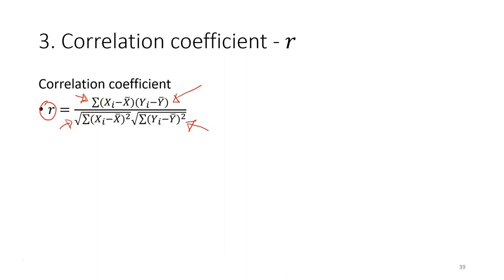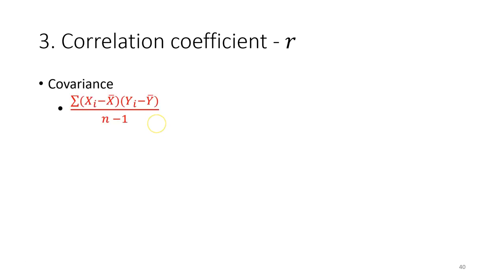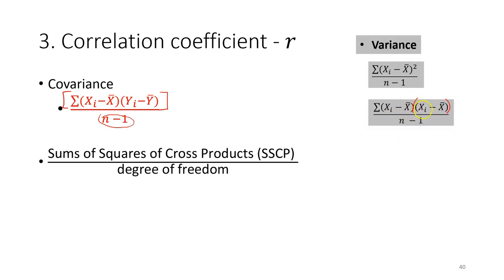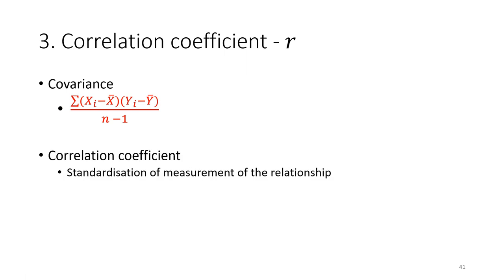Before calculating the correlation coefficient, we have to understand covariance. In the previous lecture we already showed how to calculate the sum of square cross products. The covariance is basically the sum of square cross products divided by the degrees of freedom. It is very similar to variance, except one element is replaced by another variable to calculate how each variable varies from its respective mean together.